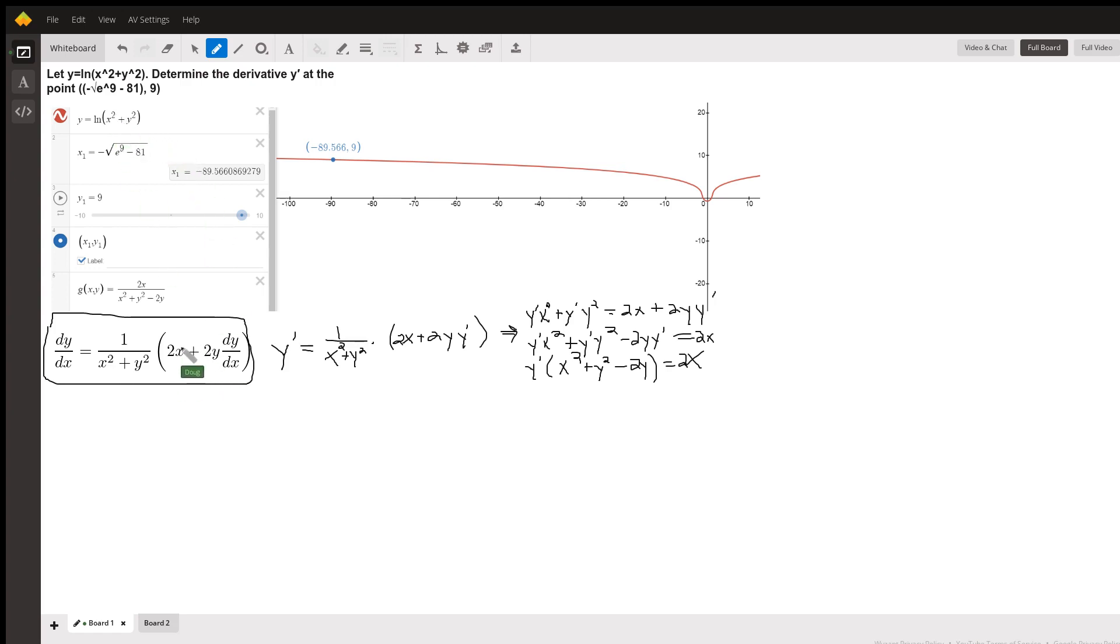The derivative of x squared with respect to x is 2x by the power rule. The derivative of y squared with respect to x is 2y by the power rule. Then multiply by the derivative of the inside, which is the derivative of y.